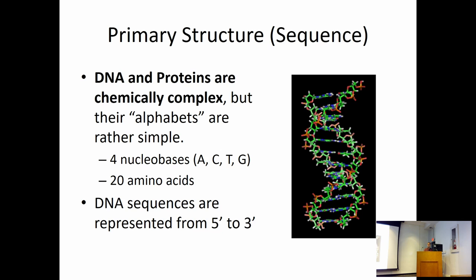Just as a way of review, remember that a lot of our primary structure can be represented by letters, which makes things a lot easier in terms of conveying to a computer what a protein or nucleic acid sequence is. With DNA, we can represent them as A, C, T, and G for the four nucleotides. We can also do this with the 20 different amino acids, which is one of the reasons why it's important to have those one-letter codes memorized.